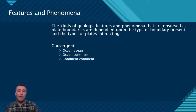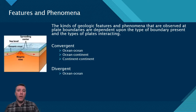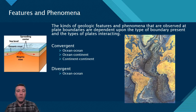Within the divergent boundary category, there are two types of interactions. The first is an ocean-ocean divergent boundary. The longest mountain range on Earth, although underwater, includes the Mid-Atlantic Ridge. Each half of the Atlantic Ocean is separated by this ridge that is slowly widening the Atlantic Ocean at a rate of about 2 to 5 centimeters per year.